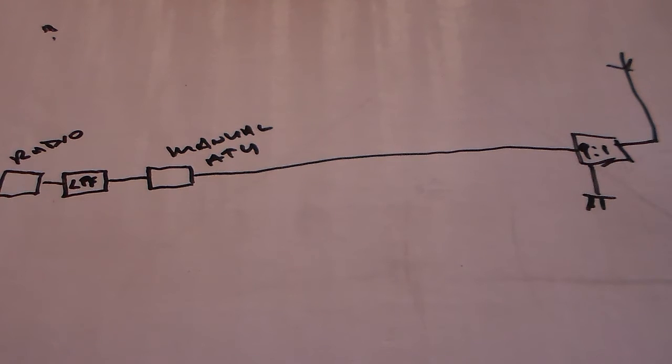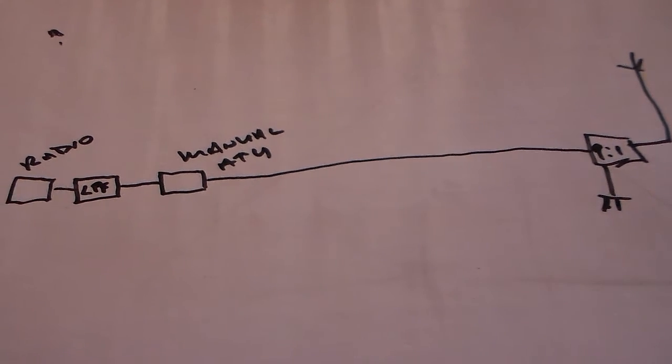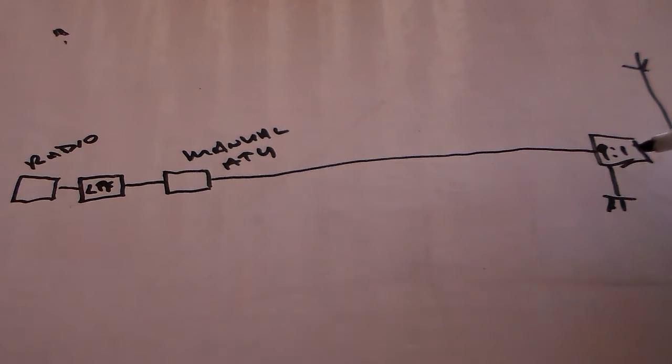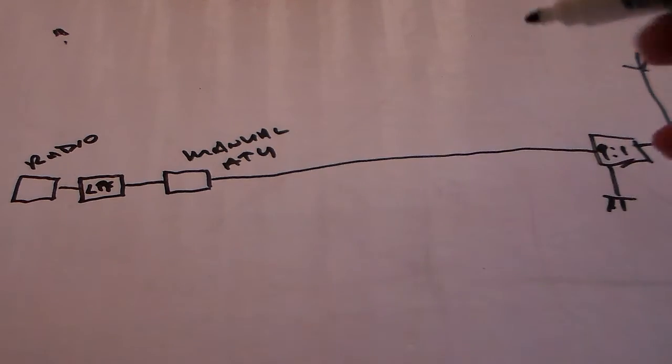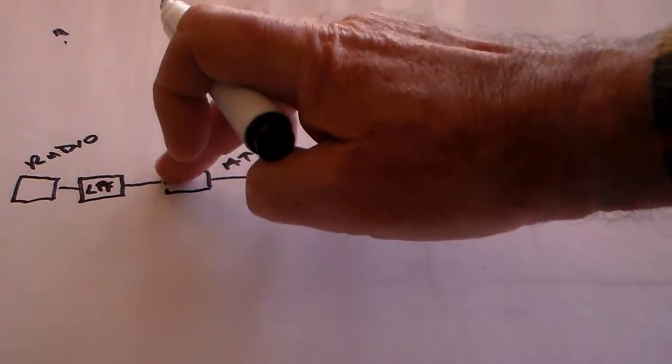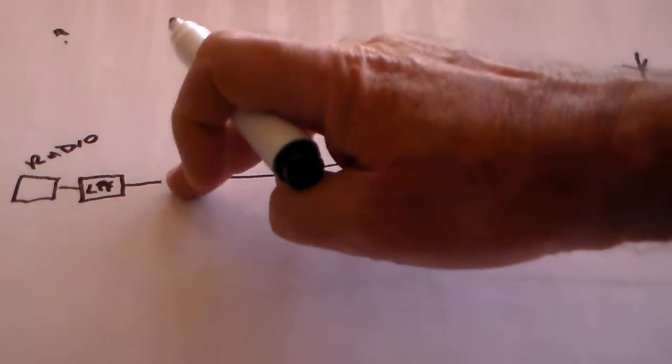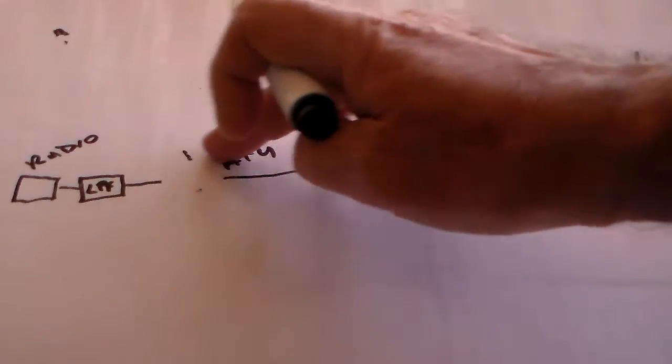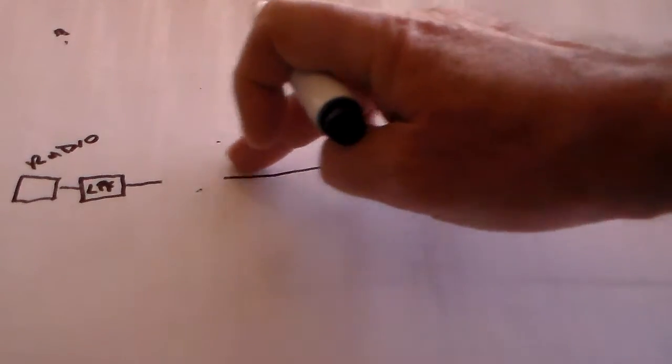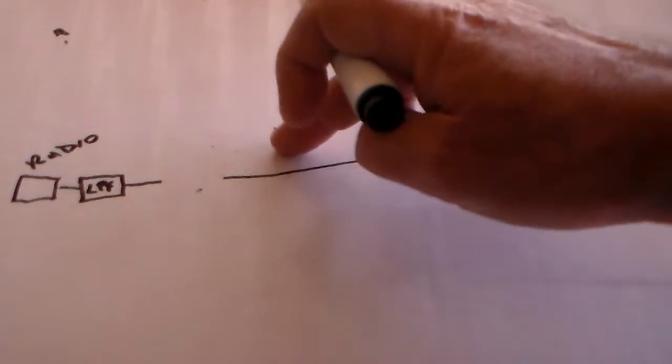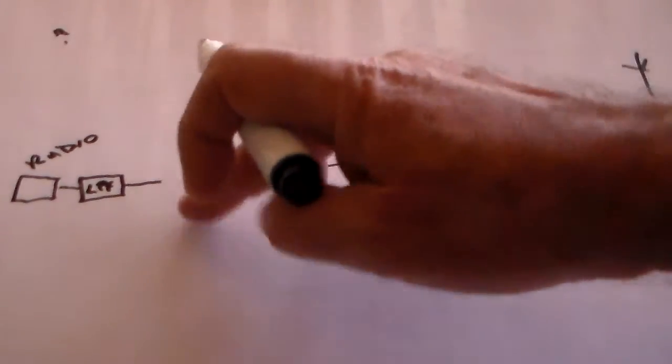Now, by far the best way of doing this is to have an automatic ATU there where the unun is. And get rid of that all together. So get rid of that there. And this is the arrangement that I had a few days ago.